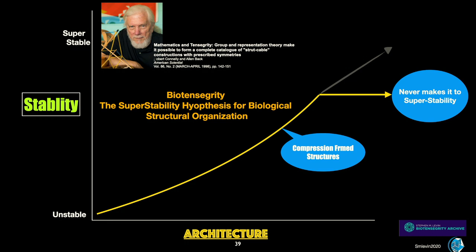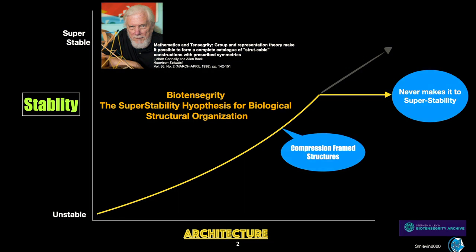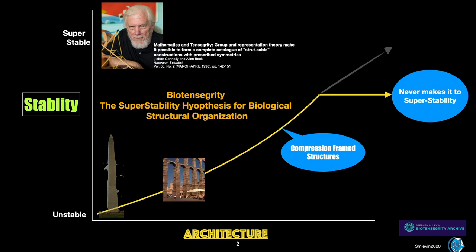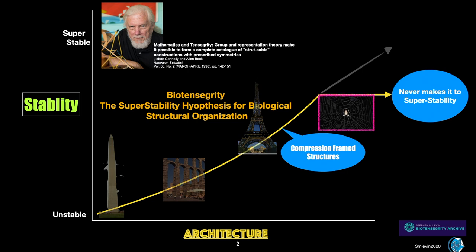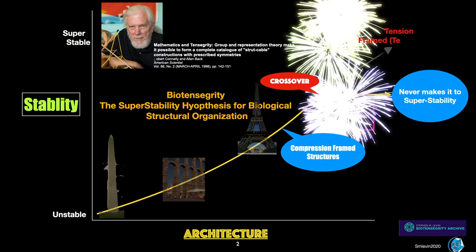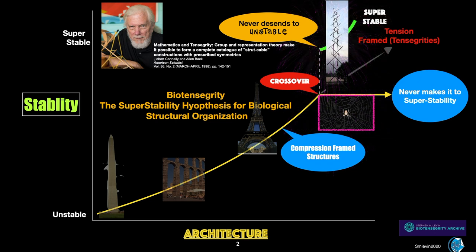If we place our architectural columns along this line, you can see the Washington Monument there, the arches there, the Eiffel Tower further up the curve, and then we hit the spiderweb right on the line. It is there we hit a crossover point where the curve of the line is disrupted. There is a leap up into superstability and an explosion into the realm of tension frame tensegrity structures. And there is no going back. There may be a range within tensegrity, but there is no sliding back into instability.